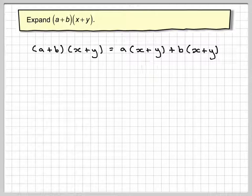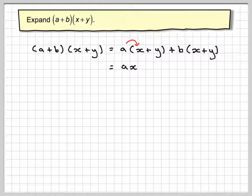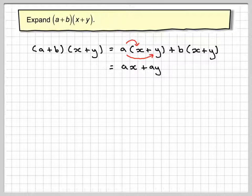So that gives me a times x, which is ax, a times y, which gives me ay.